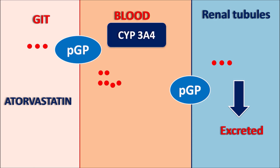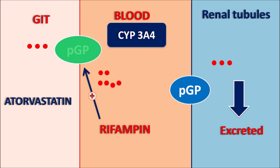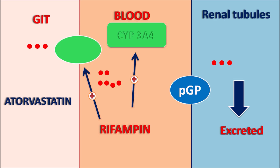Rifampin induces P-glycoprotein transporters at the GI tract, increasing efflux of atorvastatin out of systemic circulation back into the GI tract. It also induces CYP3A4, increasing metabolism of atorvastatin. Additionally, it induces P-glycoprotein transporters at the renal tubules, increasing urinary excretion. Most importantly, rifampin stimulates P-glycoprotein pumps at the hepatic cells, increasing biliary excretion of atorvastatin. This is the most significant mechanism, as rifampin decreases atorvastatin levels in systemic circulation by increasing excretion through the bile.